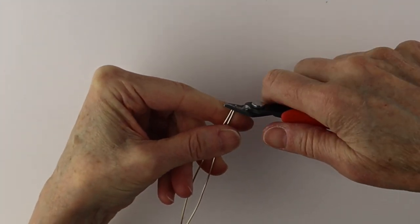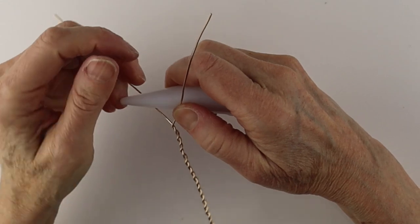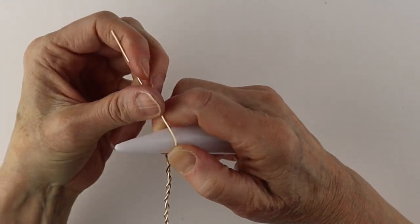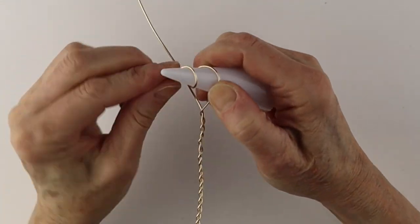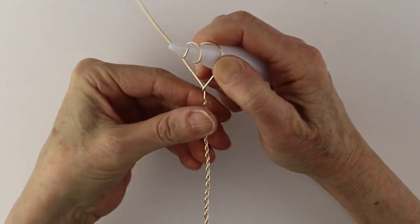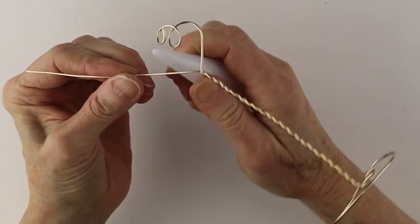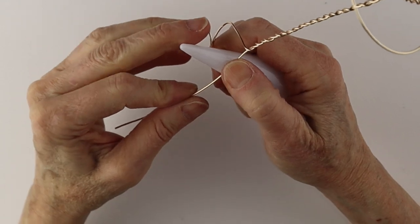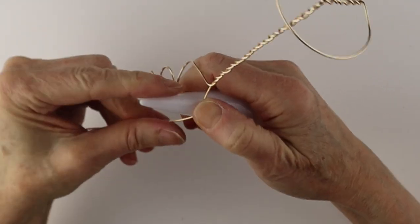From there clip the ends so those two wires are the same length and then we're going to do our spiral again. So position your ring cone at about the center of the cone and then do the same on the other side.